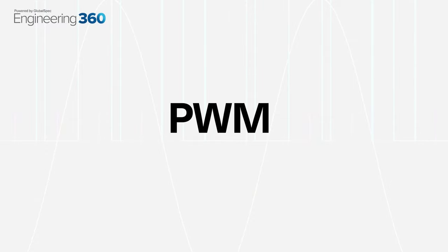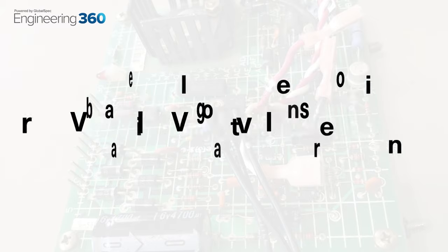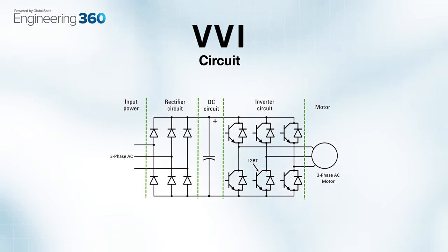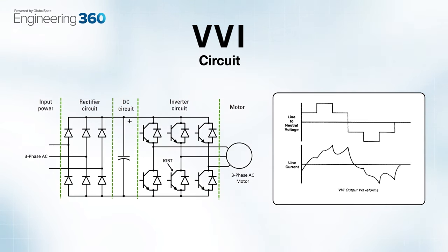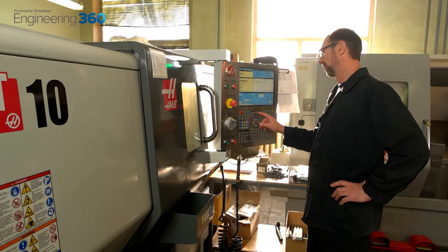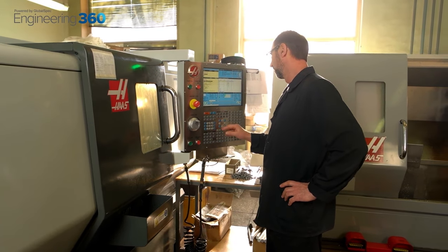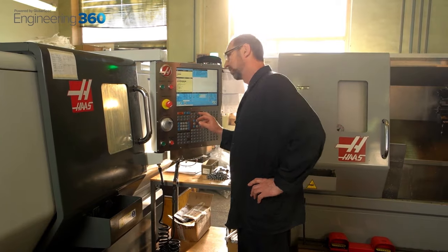The second method is variable voltage inversion, or VVI. This is where the AC frequency of the power source is rectified to a DC current and then increased and decreased in discrete steps to imitate a sine wave. Operators can regulate these steps to effectively change the motor speed. This variation of an AC drive is commonly referred to as a six-step inverter.